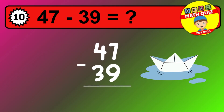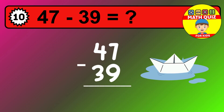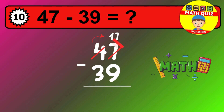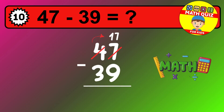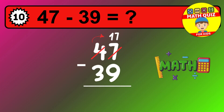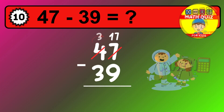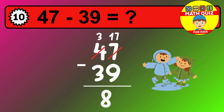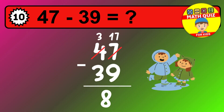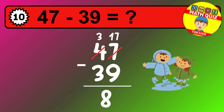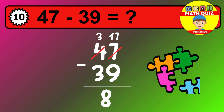Let's solve this step by step. We start with the units. 7 minus 9 is not possible, so we need to regroup. We take one 10 from the tens column. Now we have three tens and the units become 17. Now we subtract. 17 minus 9 is 8. Then we go to the tens. 3 minus 3 is 0. The final answer is 8.